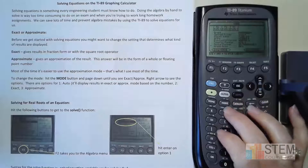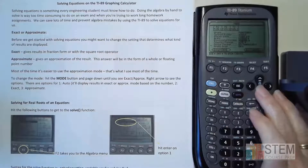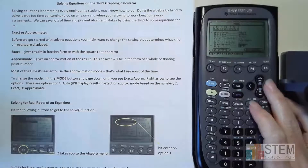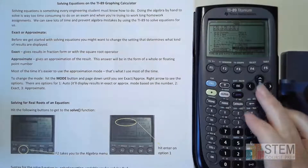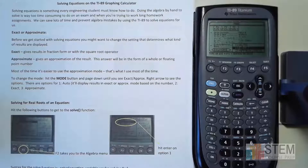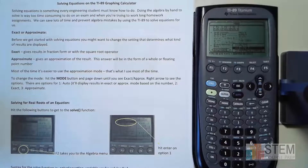Go to mode and scroll down to the right, where you have auto, exact, and approximate. Auto supposedly automatically determines whether it should be exact or approximate mode, but I don't really like auto mode because it also gives you results in fractions.